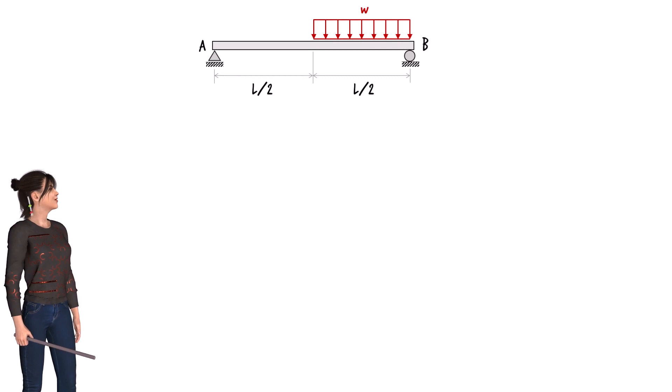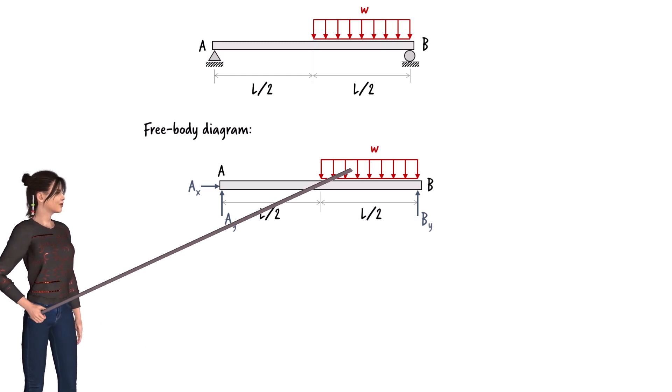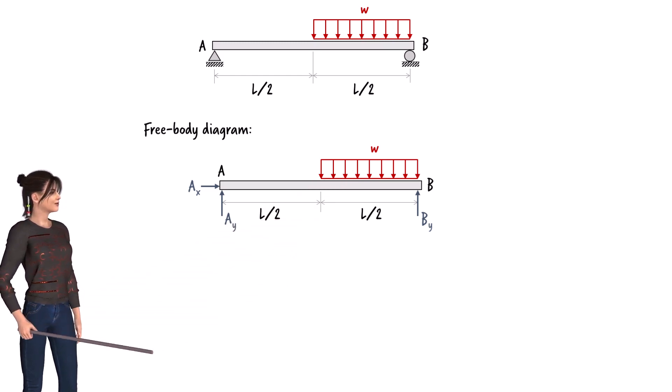We can start by drawing the beam's free body diagram. The diagram shows the unknown reaction forces and the applied load. The uniformly distributed load has the shape of a rectangle. The height of the rectangle represents the load magnitude.